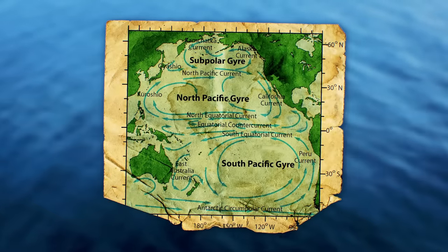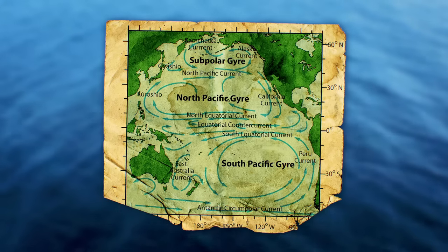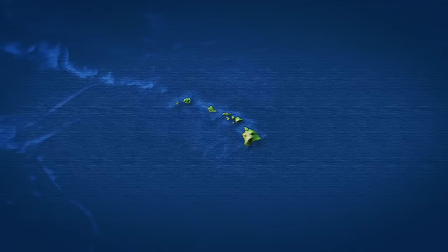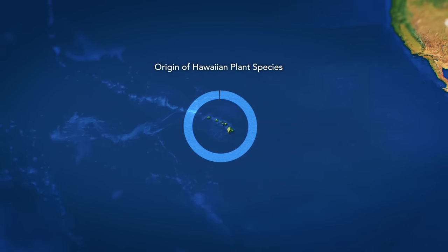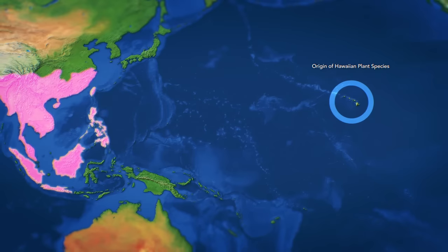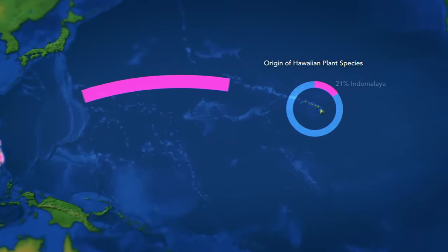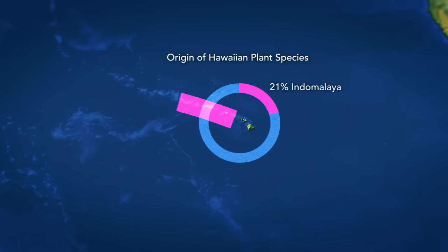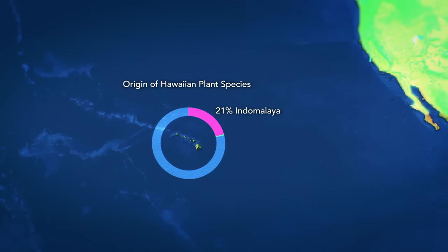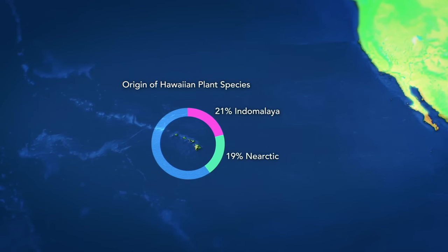Despite being located closest to North America, prevailing ocean currents lead the waters of the northern Pacific to circulate counterclockwise, acting as a conveyor belt delivering material from all over the ocean to these islands. This explains why, when analyzing the plant species present and deciphering their realm of origin, it was found that Indo-Malaya was the greatest source of native Hawaiian plant species, having supplied 21% of Hawaiian flora, despite being the furthest away. The Nearctic was the second most influential, that's unsurprising, supplying 19%.